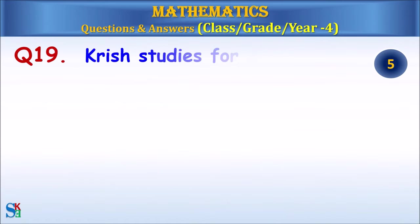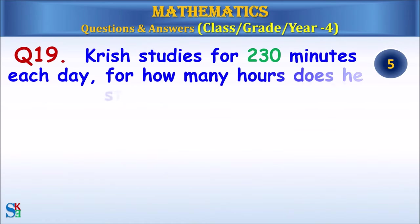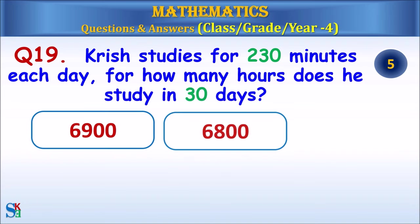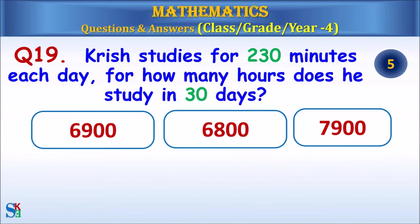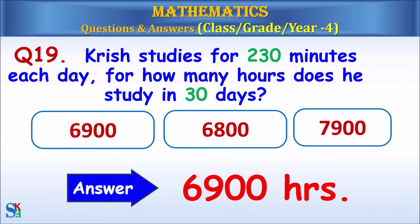Question 19: Krish studies for 230 minutes each day. For how many hours does he study in 30 days? The answer is 6,900 hours.